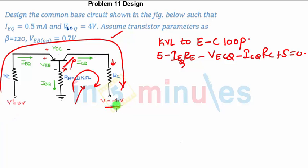So what all values you know? IEQ you know, RE we have found in the previous case, VECQ is given in the question, ICQ we know, RC we don't know. All the other parameters we know. So after solving, you will get the value of RC as 3.513 kilohms.